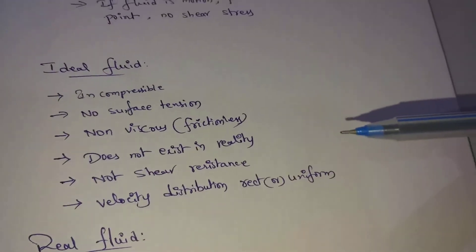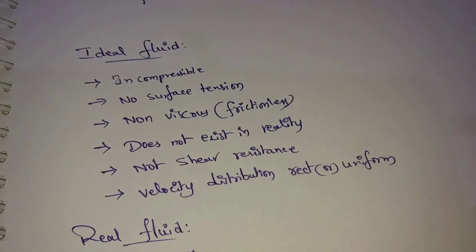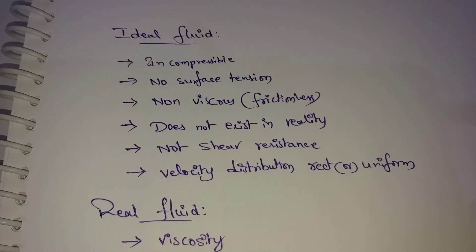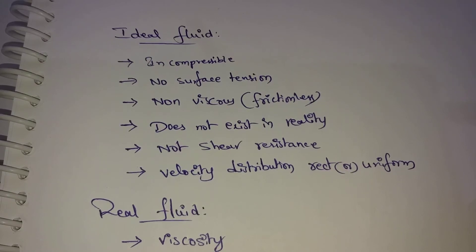The velocity distribution in an ideal fluid is rectangular and uniform. When the fluid is in motion, the velocity distribution is uniform. Ideal Fluid is also known as Perfect Fluid.